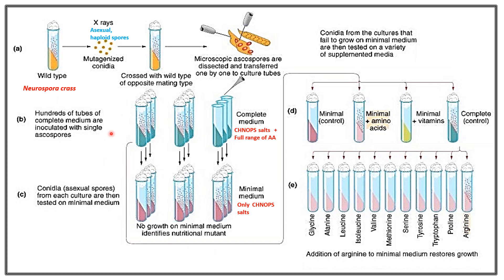Returning to culture B, which showed a no-growth phenotype, the individual haploid spores were grown on a minimal control, then minimal plus amino acids, minimal plus vitamins, and the complete control medium. The mutant did not grow in the minimal control or minimal plus vitamins, but only grew in minimal plus amino acids and the complete medium.